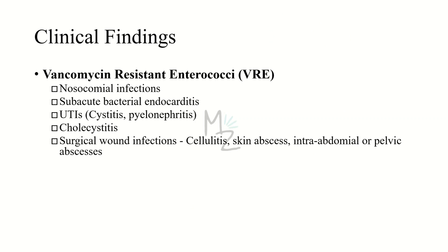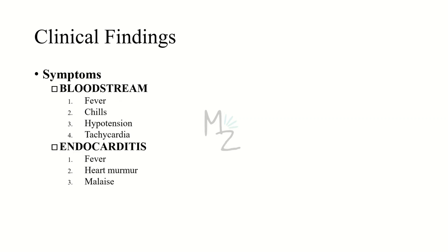Vancomycin resistant enterococci (VRE) are responsible for causing nosocomial infections, subacute bacterial endocarditis, UTIs like cystitis and pyelonephritis, certain biliary diseases like cholecystitis, surgical wound infections like cellulitis, urosepsis, and intra-abdominal or pelvic abscesses.